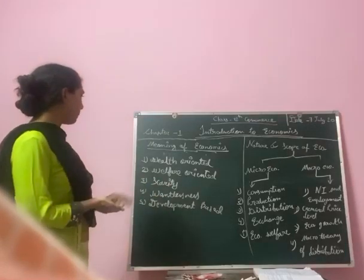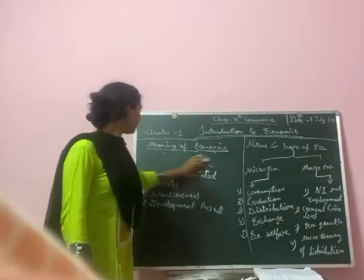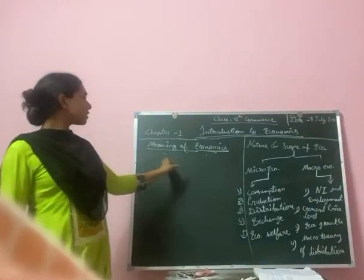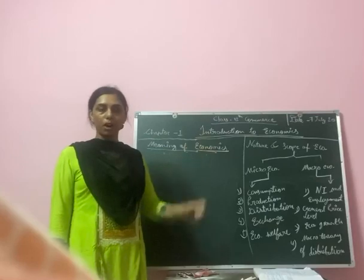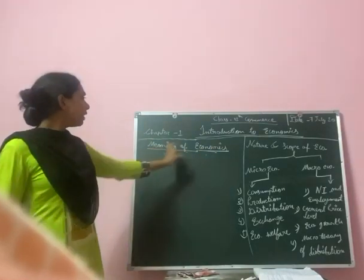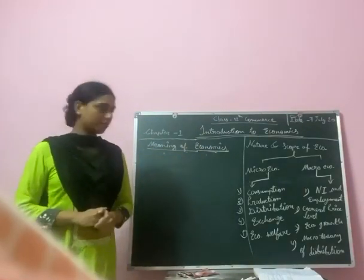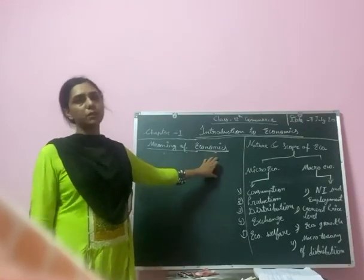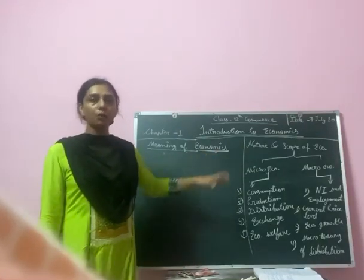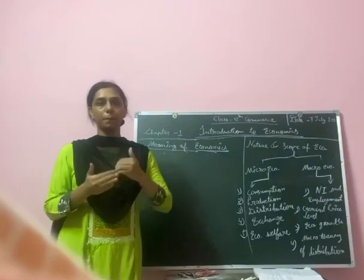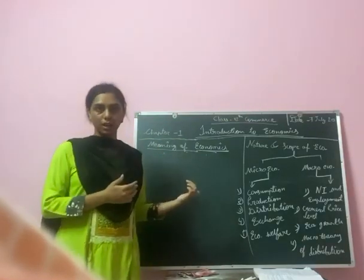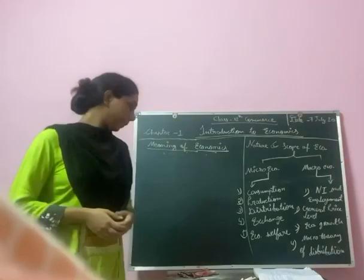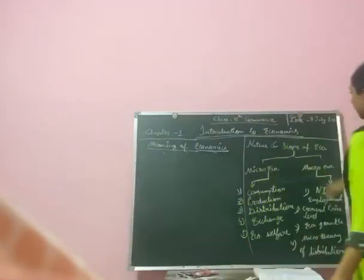So here are the five definitions which describe the simple meaning of economics according to various economists. Basically, the single meaning of economics is: it is a science which studies human behavior — how a human could stabilize the relationship between needs, which are unlimited, and resources, which are limited.